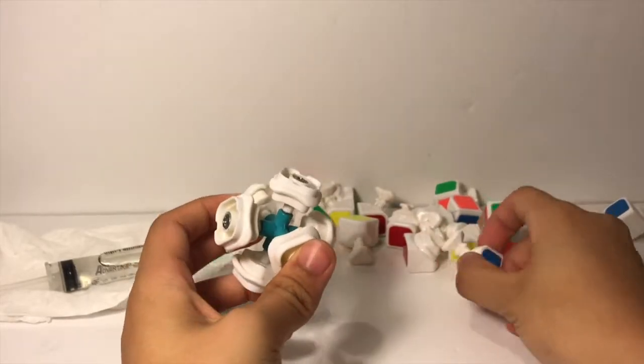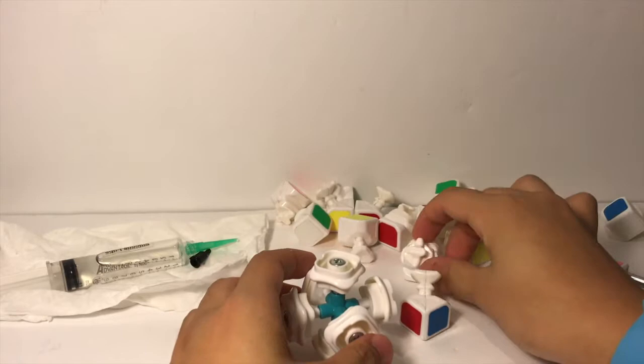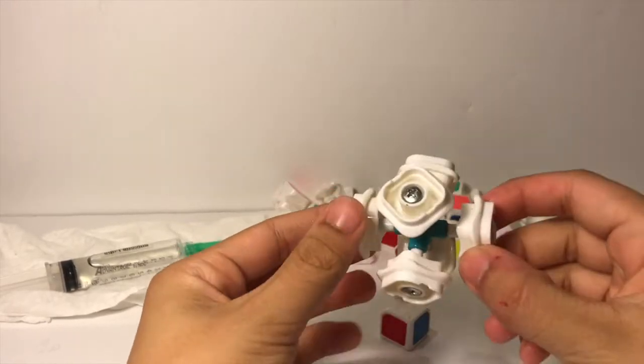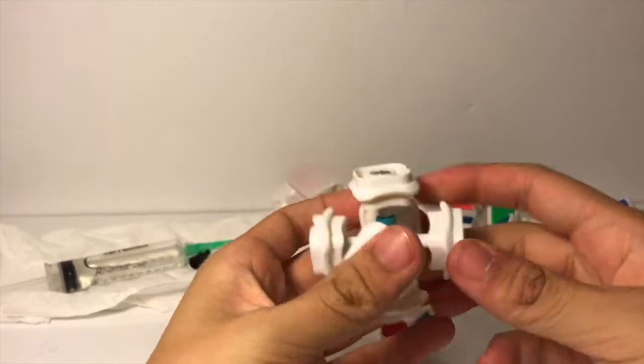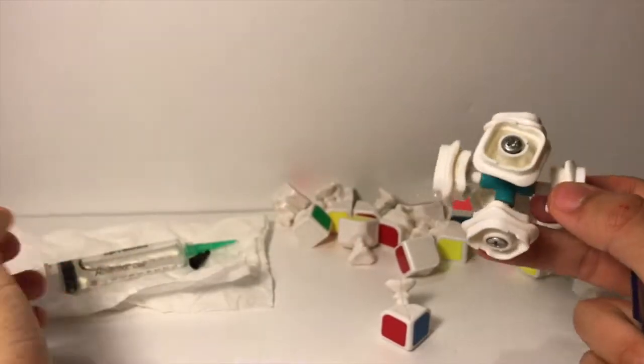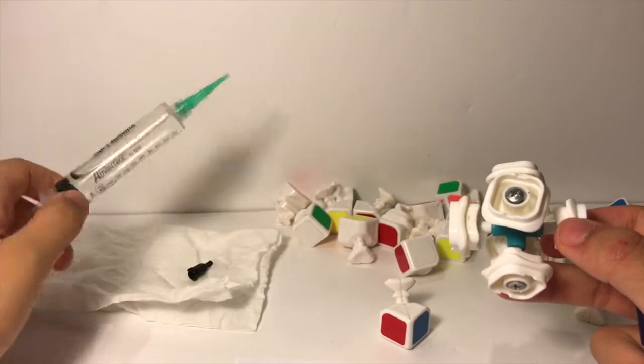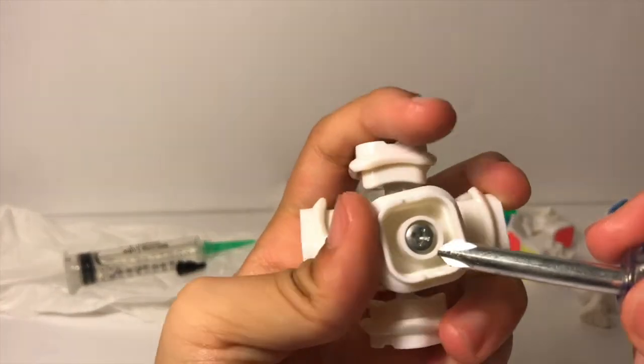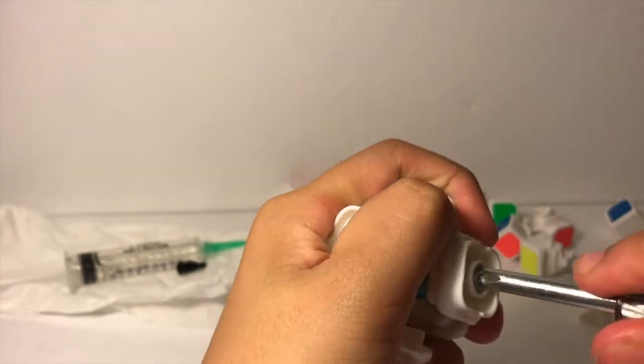First I usually pull out an edge piece, and you can put these to the side. Continue and take out corners and everything. Now you can just take this apart and make sure you just get to the core. Now that you have your core, you may want to wipe down some of your pieces if this is a stock cube because the lube doesn't always tend to be very good.